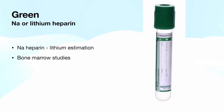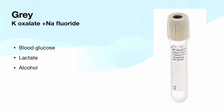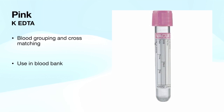The green tube contains sodium or lithium heparin. It is used for bone marrow studies. Sodium heparin is used when you want to avoid lithium estimation, and lithium heparin is most commonly used for other blood and bone marrow investigations. The grey tube contains potassium oxalate and sodium fluoride. It is used for blood glucose estimation — fasting and postprandial — lactate, and alcohol.